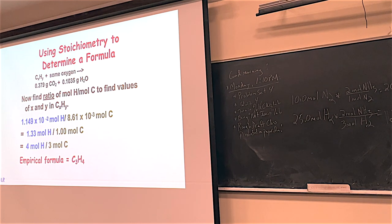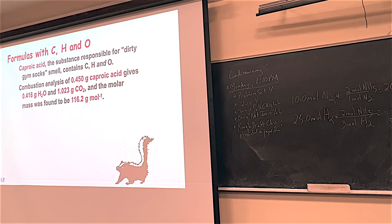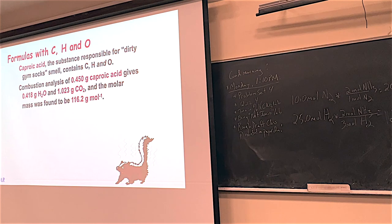Many organic chemicals have not just carbon and hydrogen but also oxygen—drinking alcohol (ethanol), steroids, and most vitamins are examples. So we also need to find formulas for compounds with carbon, hydrogen, and oxygen. This is actually a more common pursuit, but there's a twist involved.